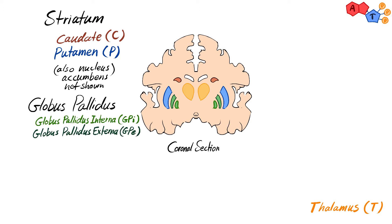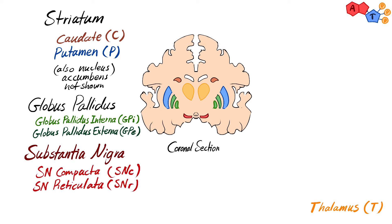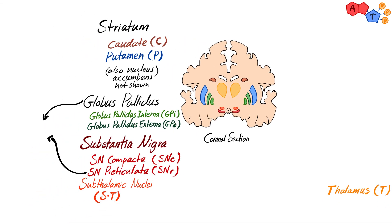Third, we have the substantia nigra, divided into two parts: substantia nigra pars compacta and substantia nigra pars reticulata. Fourth and last is the subthalamic nucleus. It is worth mentioning that both the globus pallidus interna and the substantia nigra pars reticulata are considered the major output nuclei of the basal ganglia.